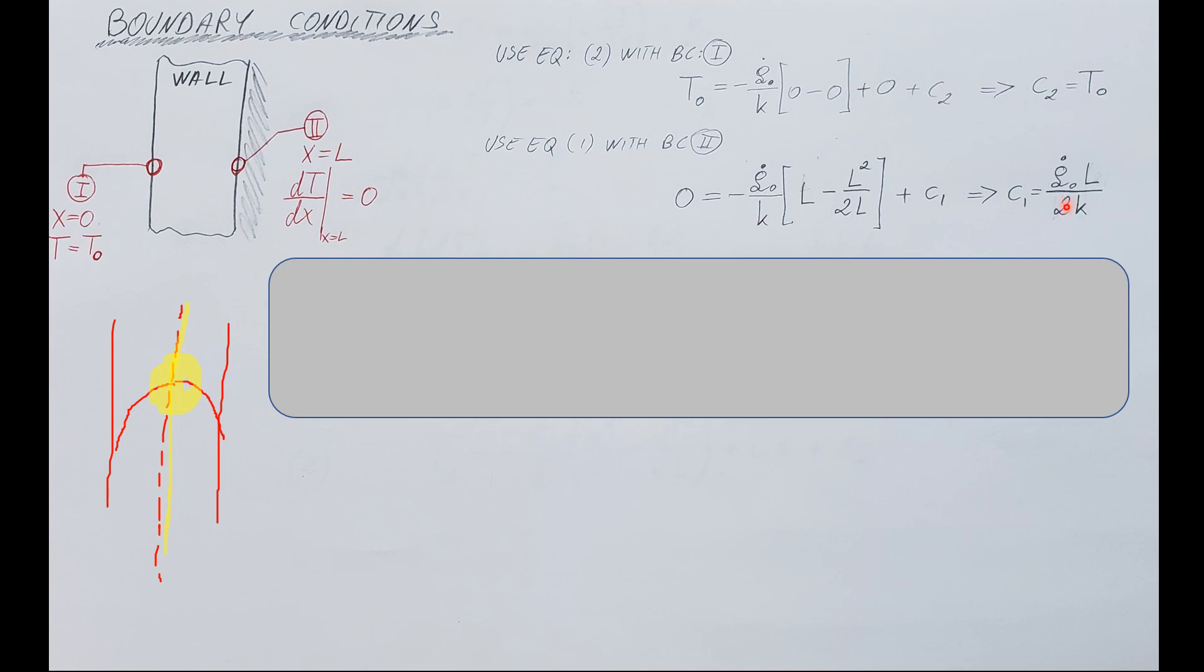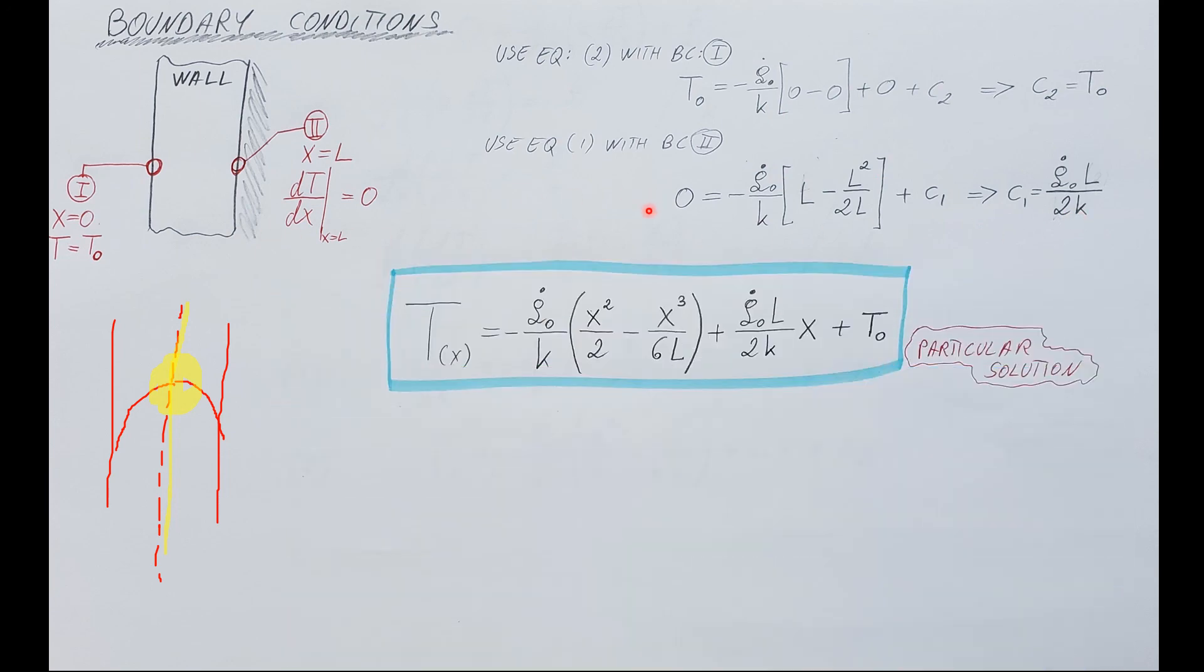Let's put our boundary conditions to use. Over here c2 equals T naught, c1 equals q naught dot L over 2k. Very good. Let's go back to our temperature distribution, the general solution that we have found, plug in our two constants that we just determined, and there it is. We found our final answer for the problem - particular solution for our differential equation and the temperature distribution in our wall, one-dimensional conduction.